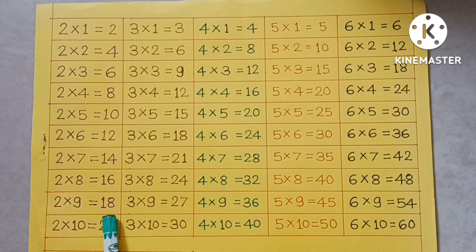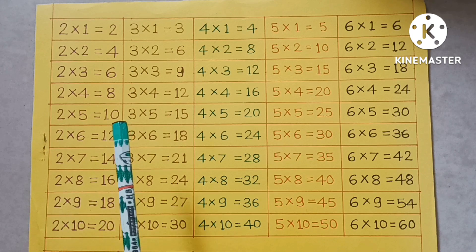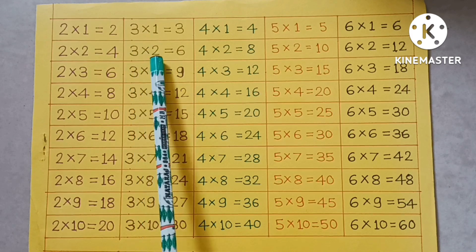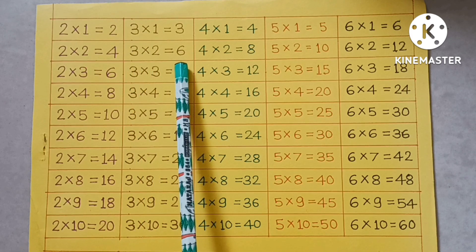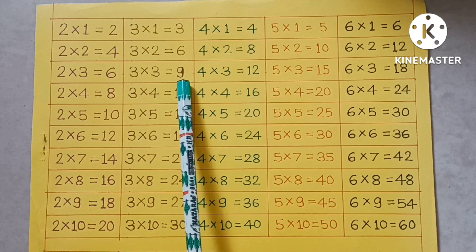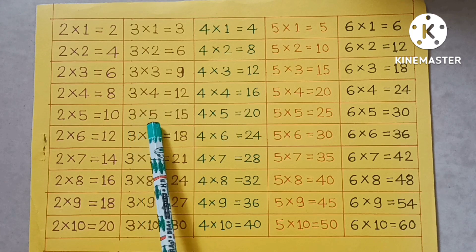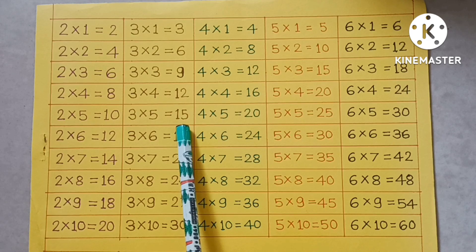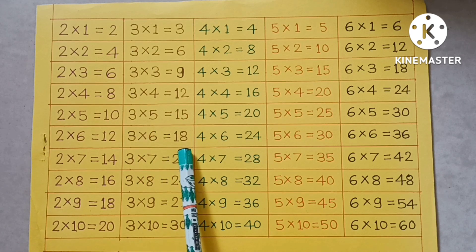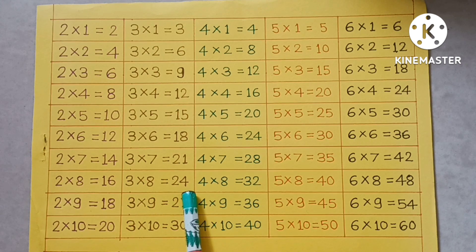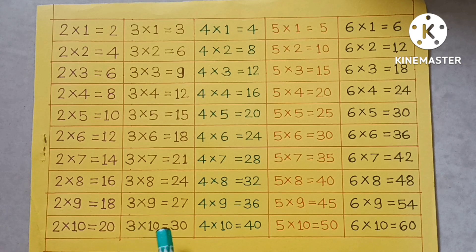2×10=20. 3×1=3, 3×2=6, 3×3=9, 3×4=12, 3×5=15, 3×6=18. 3×7=21, 3×8=24, 3×9=27, 3×10=30.